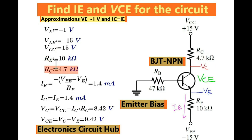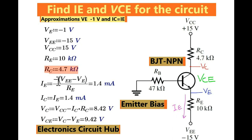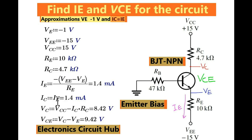Let us calculate the value of IE, that means the current flowing through the emitter terminal and through resistance RE. You can find the value of IE using this formula. This gives you IE equals 1.4 milliampere. Now you got the value of IE, and since in your approximation IE equals IC, your IC becomes IC equals IE equals 1.44 milliampere.